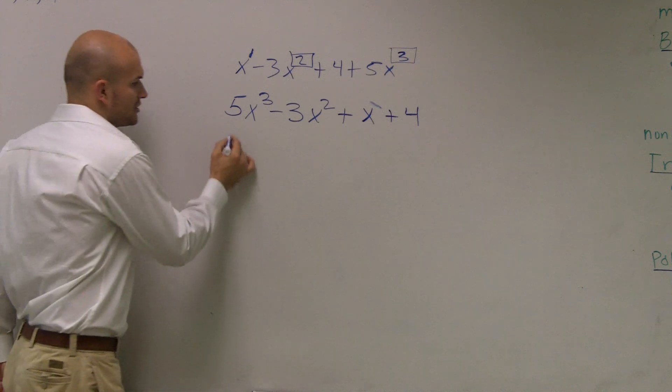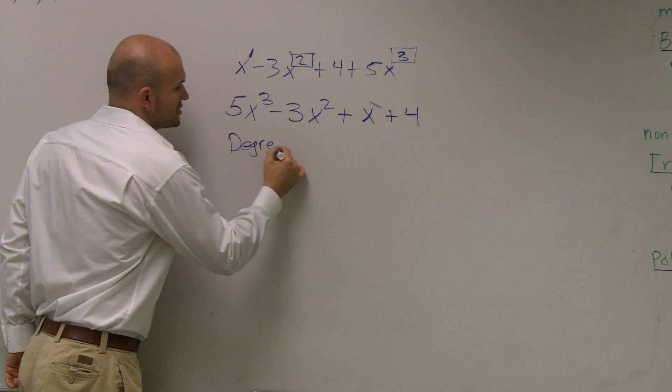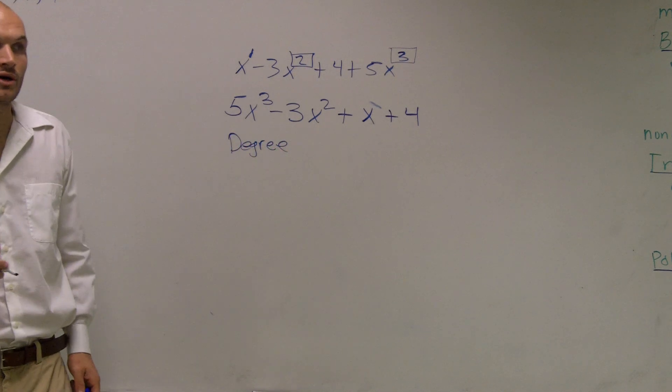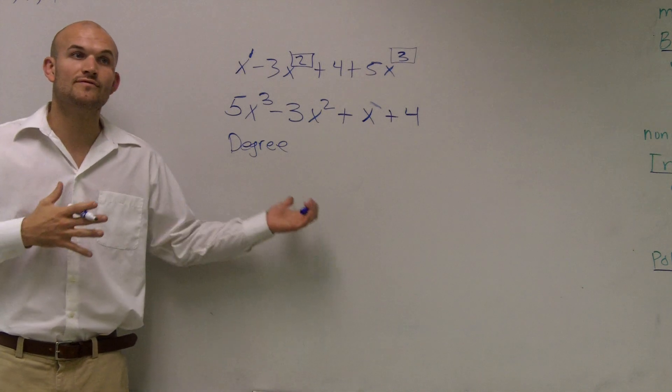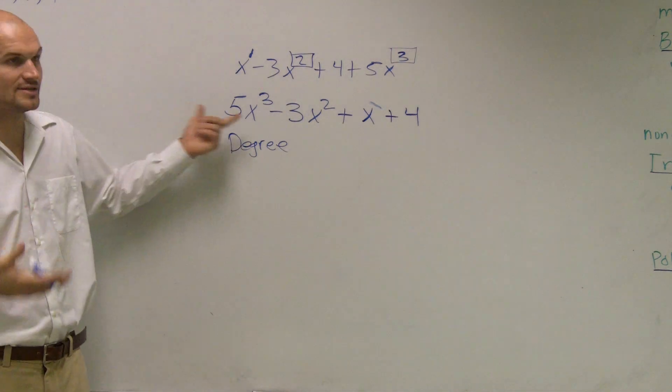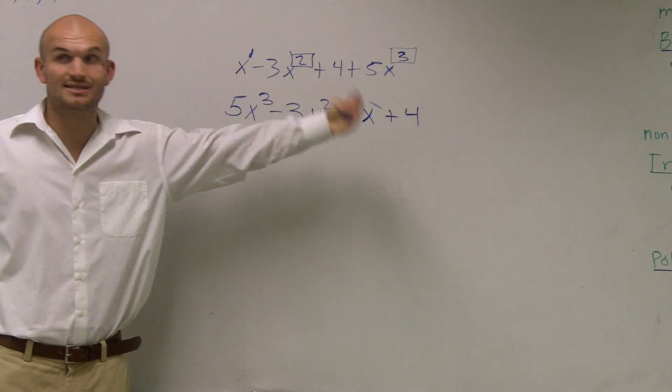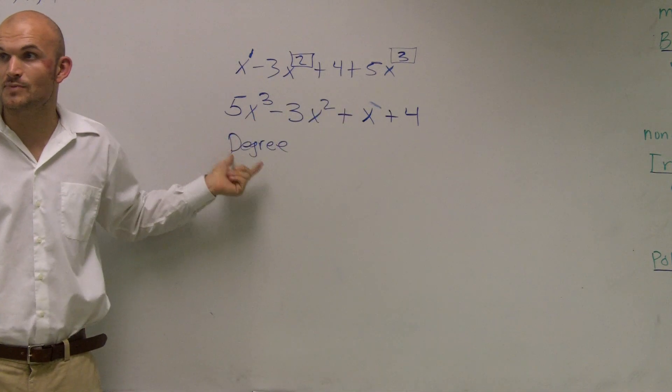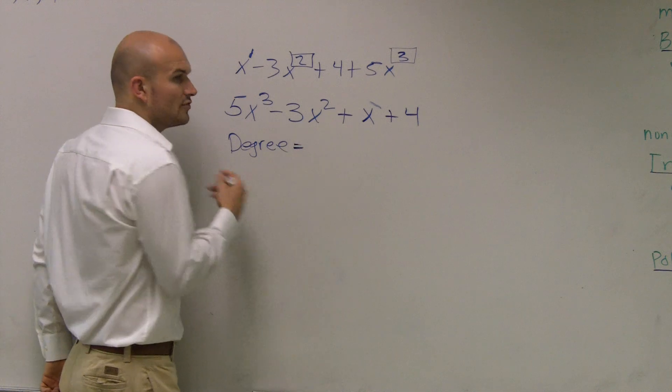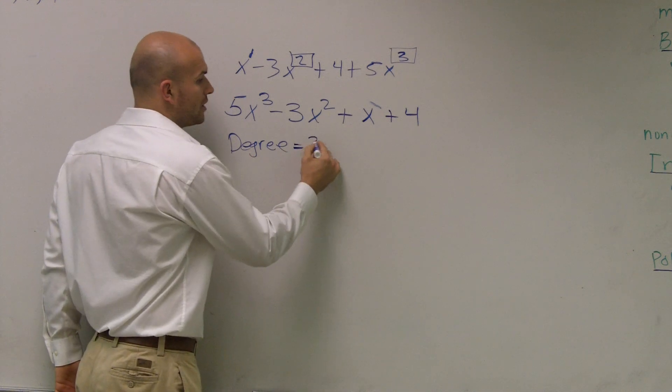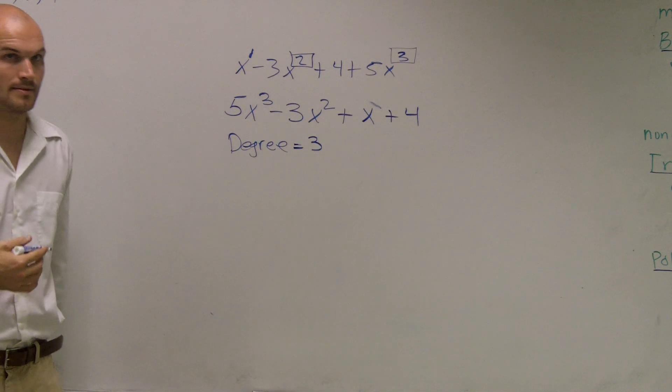So now the next thing is I want to find the degree. So our definition of our degree of our polynomial is the largest exponent degree of the whole polynomial. So look at this. And obviously, since I've ranked them from greatest to least, what is the largest exponent I have? 3. So the degree of the polynomial is 3.